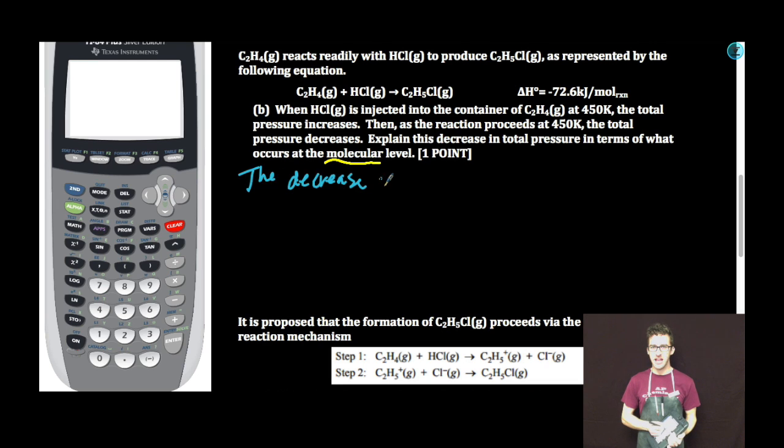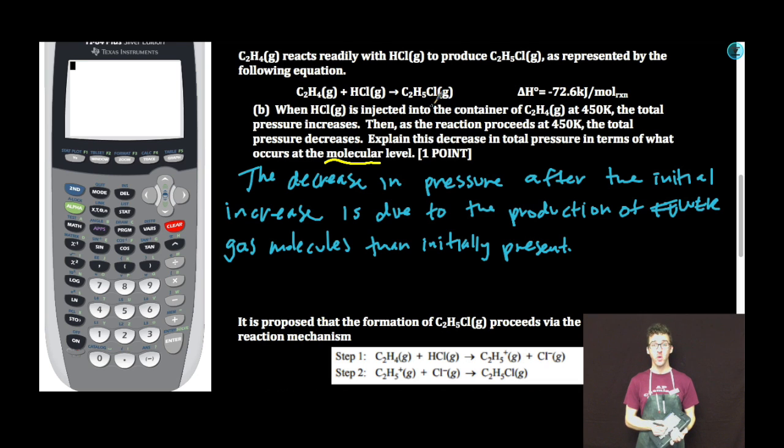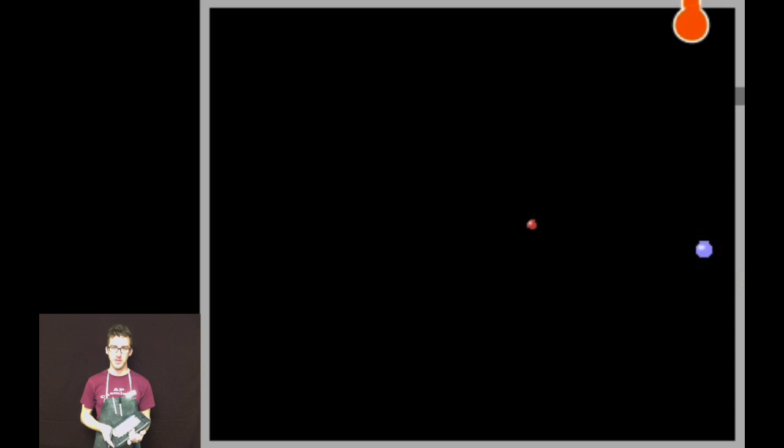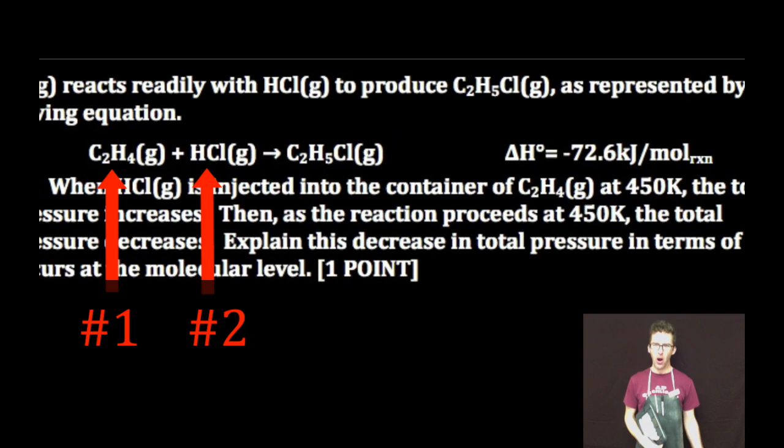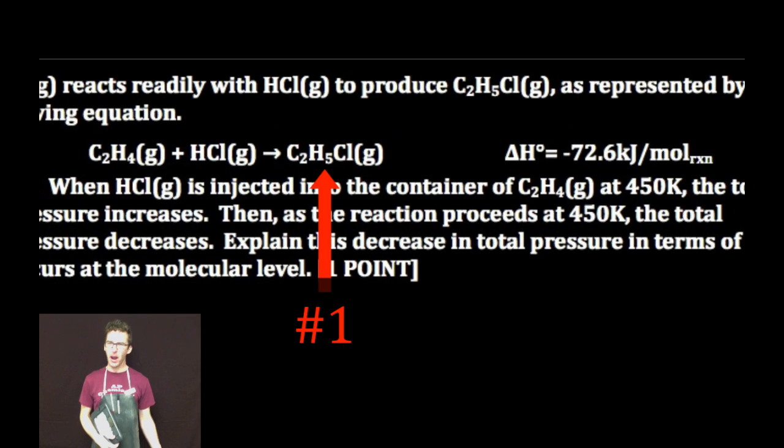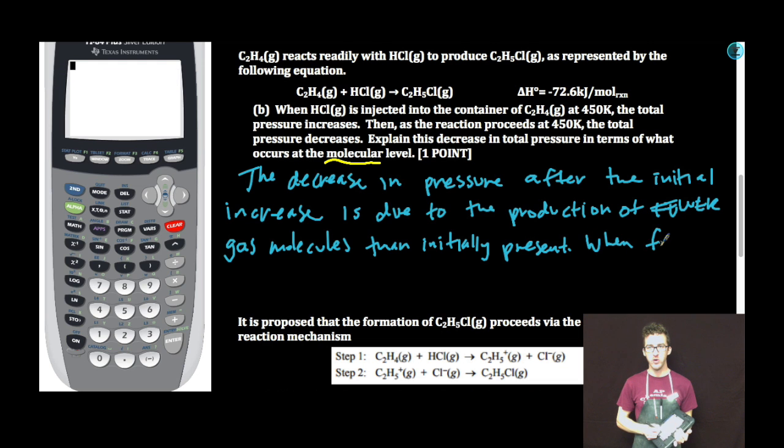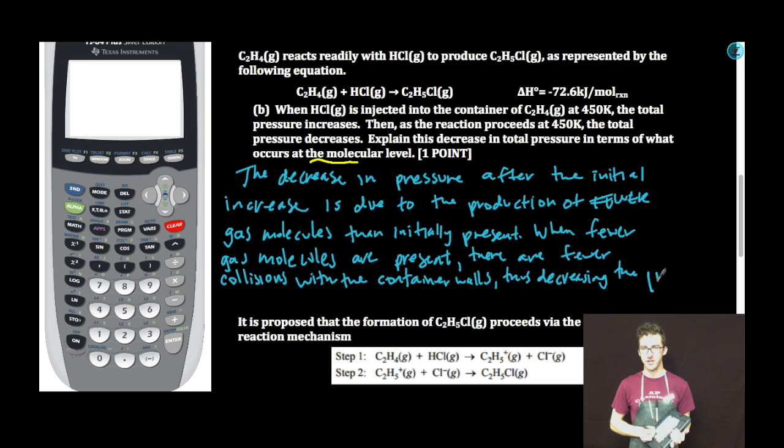Molecular. The decrease in pressure after the initial increase is due to the production of fewer gas molecules than initially present. Notice in the chemical equation that for every two moles of gas molecules that we have initially as reactants, we're only forming one mole of gas product. Recognize that I have two molecules of reactant gas particles banging around into the walls before the reaction, accounting for the initial increase in pressure. But after, I have just one. Less collisions with the sides of the container. When fewer gas molecules are present, there are fewer collisions with the container walls, thus decreasing the pressure. One point.